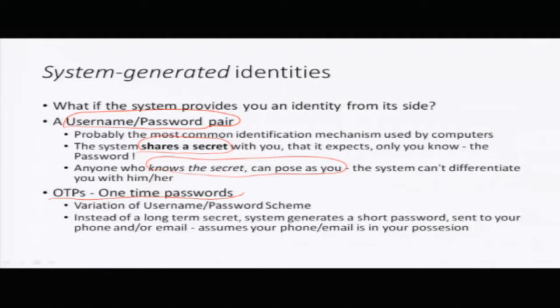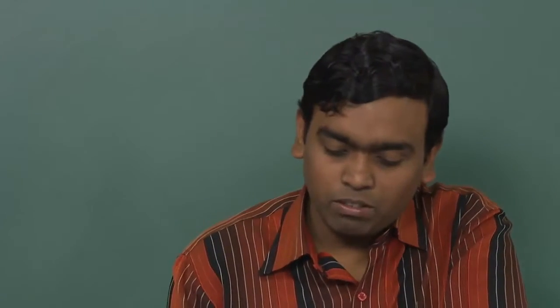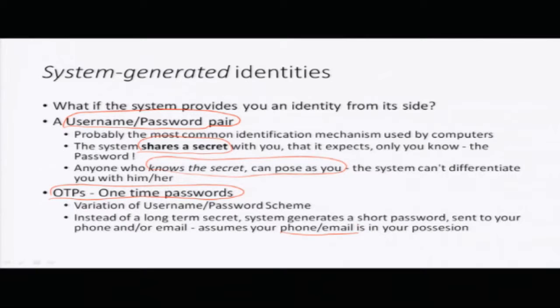There is a variation to this called OTPs or one-time passwords. One-time passwords are basically system generated identities for short term. The system generates some kind of a random string, it is sent to your registered phone or email, and you are supposed to enter this information within a few minutes. The assumption the system makes is that the phone or email on which the password was sent is in your possession.